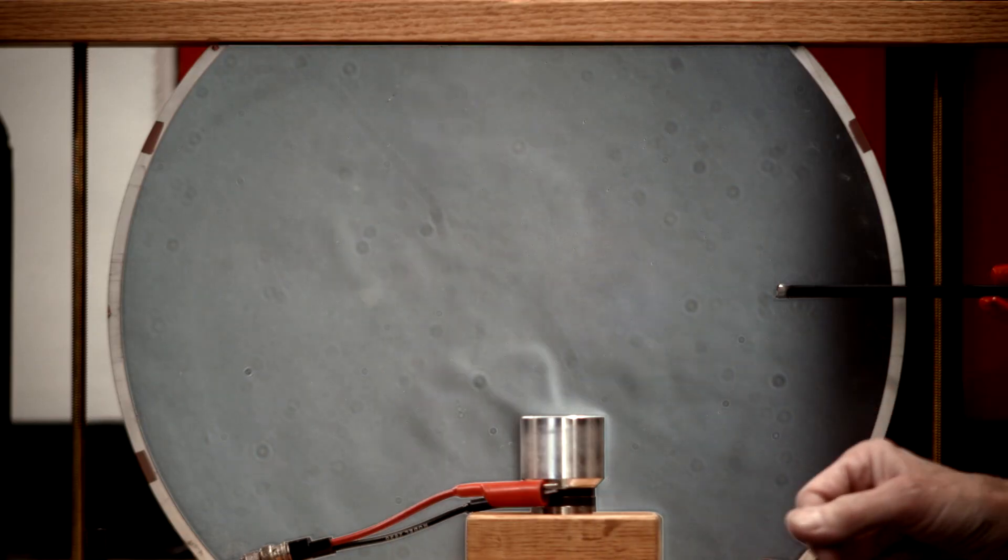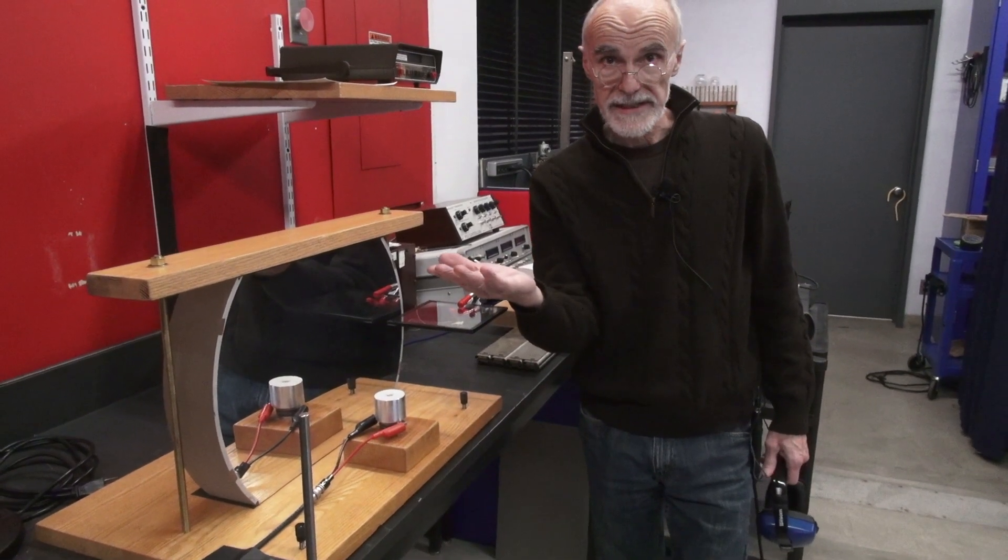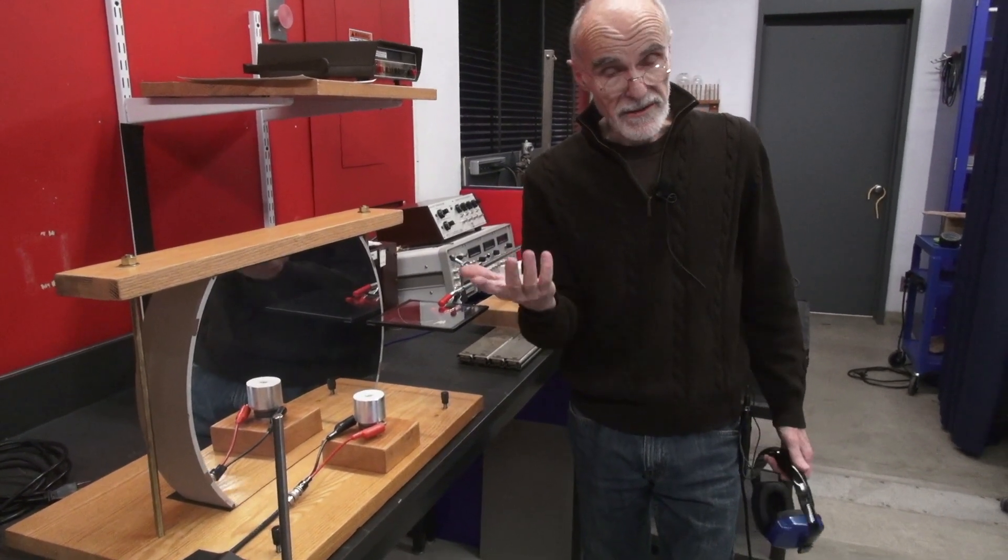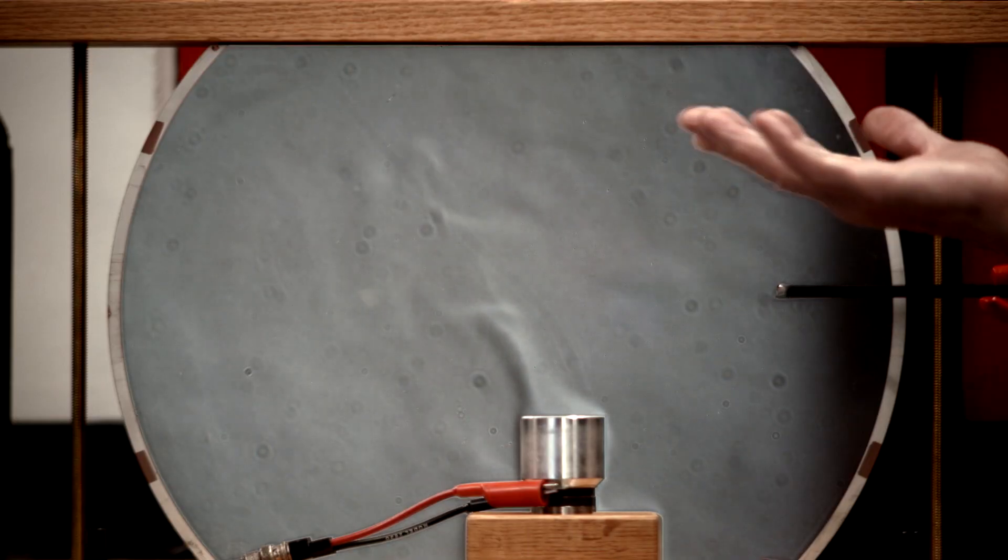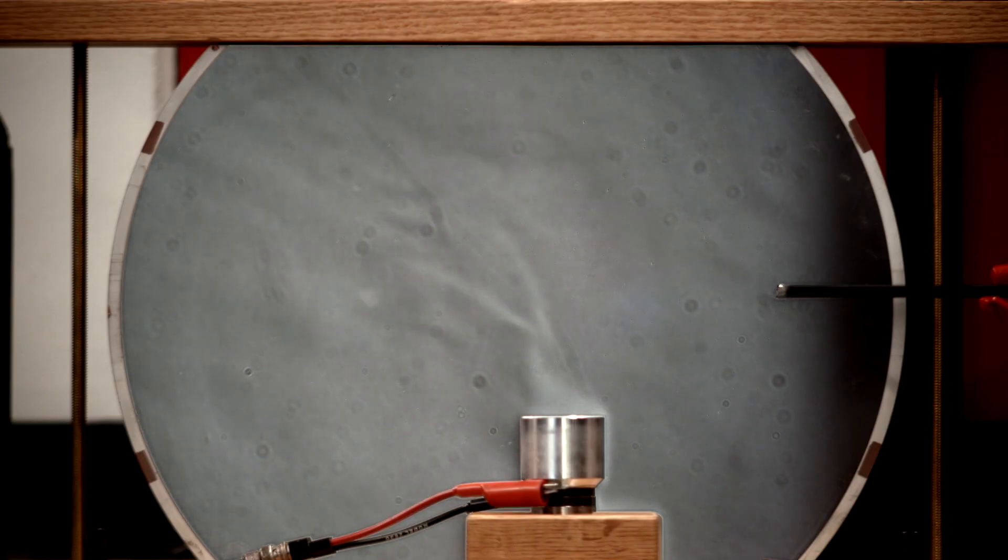We've put the transducer down here to produce some traveling waves that are going to move vertically upward, and what we want to do is see how they interact with a plate that we're going to move into the path of these traveling waves.